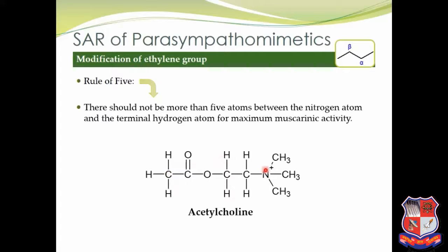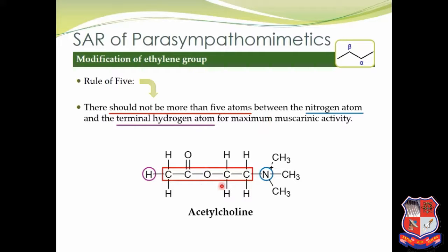What is the Rule of 5? There should not be more than 5 atoms between the nitrogen atom and the terminal hydrogen atom for maximum muscarinic activity. Looking at the structure of acetylcholine in expanded view: the nitrogen atom on one end and the terminal hydrogen atom at the other end — between these two there should not be more than 5 atoms. Counting: 1, 2, 3, 4, 5 atoms — 5 atoms is perfect for maximum activity. If it is more than 5, activity decreases.